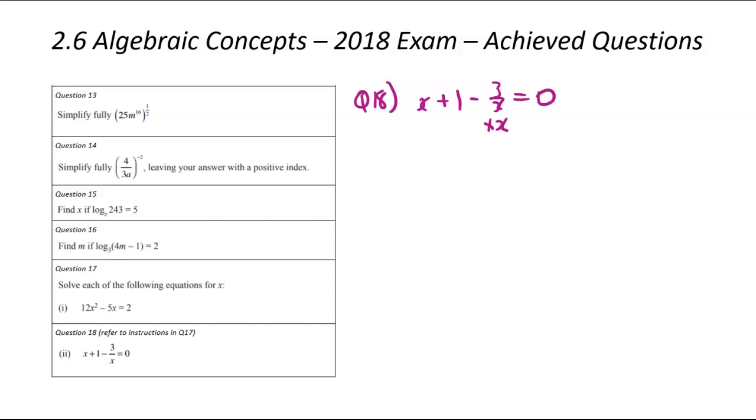I've got to times all of the parts by x. And that there will keep the seesaw kind of balanced. So x times x is x squared. 1 times x is x. That becomes 3x divided by x. And that becomes 0 times x.